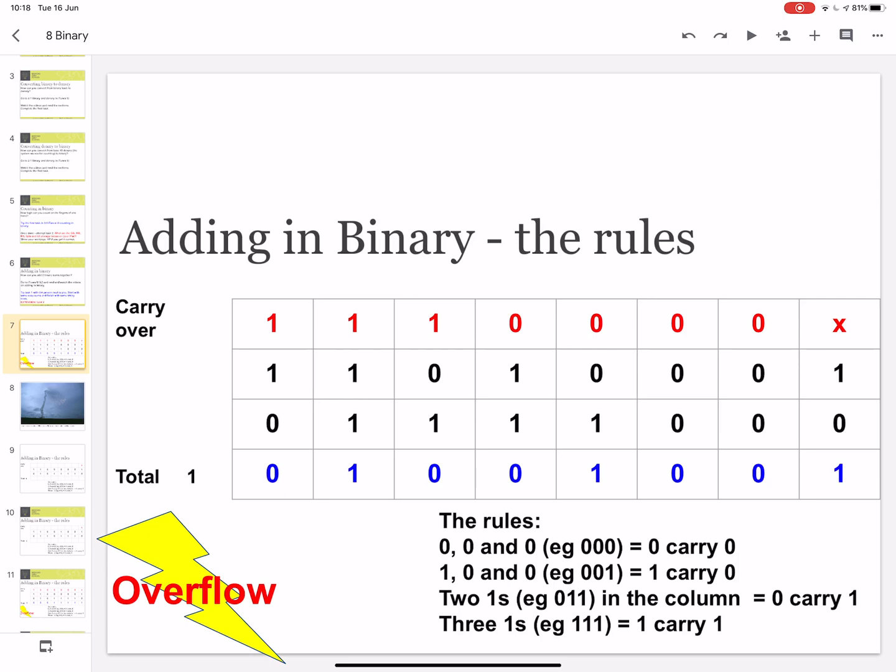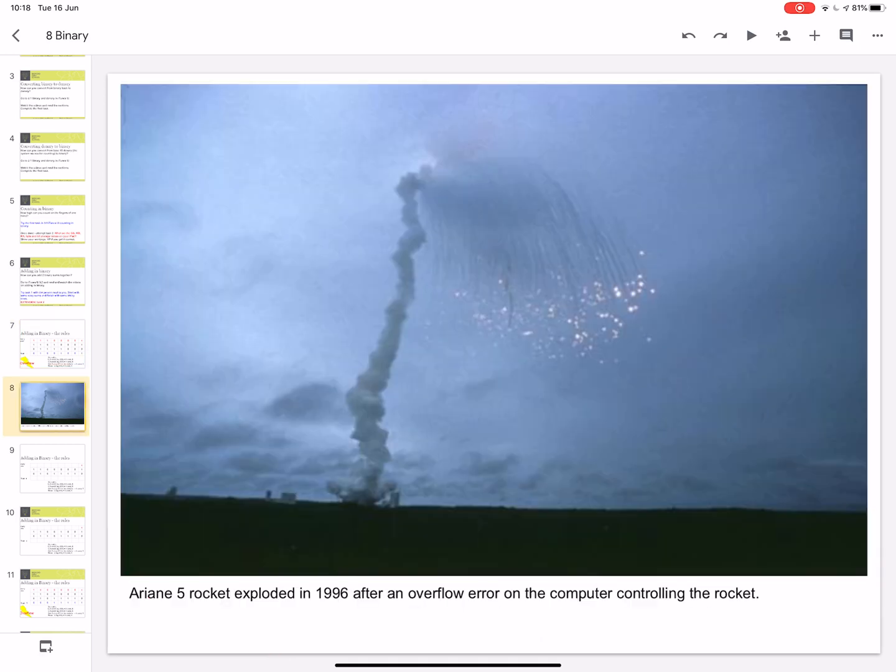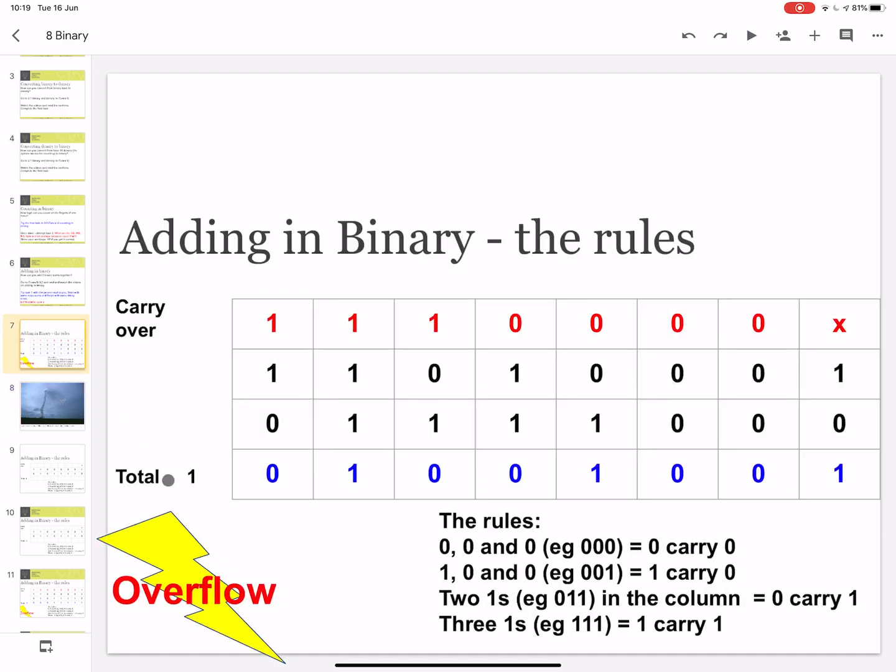So what happened is two integers were added together. This created an overflow, a 17th bit, which the computer couldn't handle. As a result, the computer crashed, and the guidance system on the rocket took it over the sea and blew it up. Nobody was hurt. It was an unmanned rocket, and everything was okay, apart from the $370 million bill, which was caused by a simple overflow error.